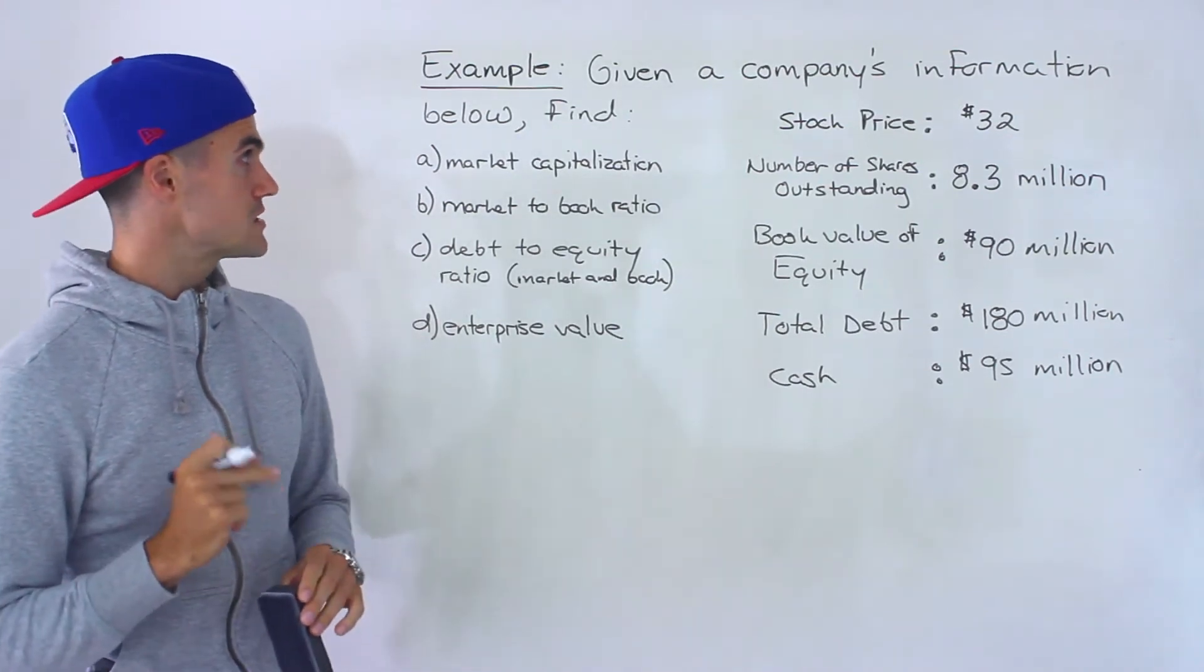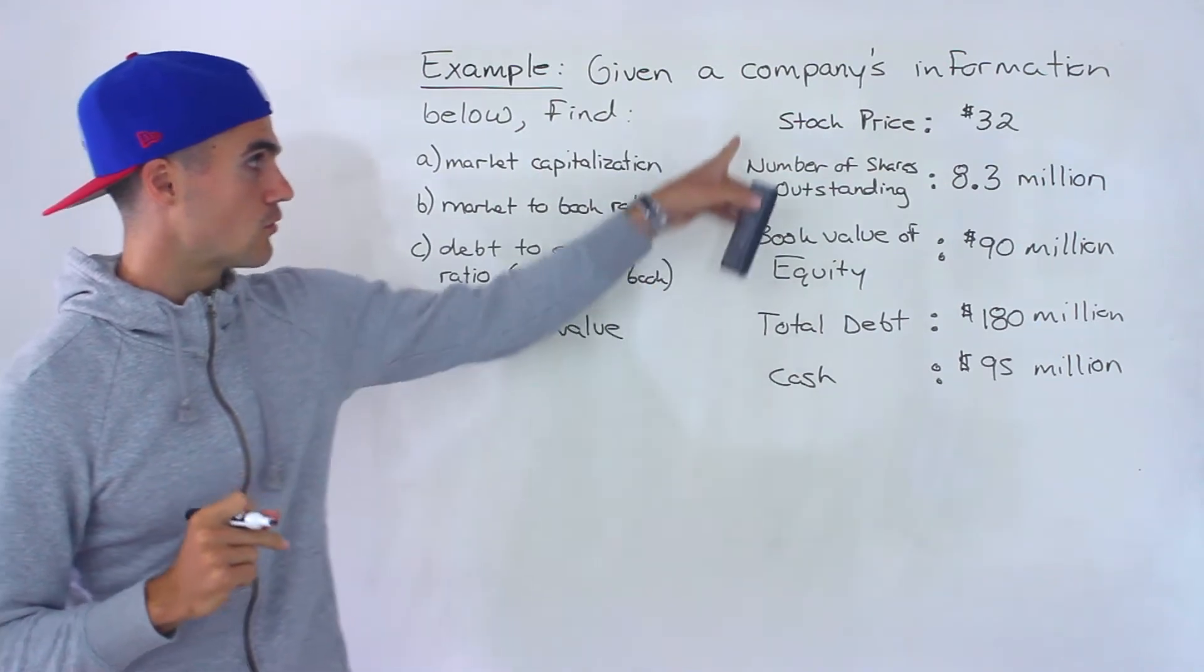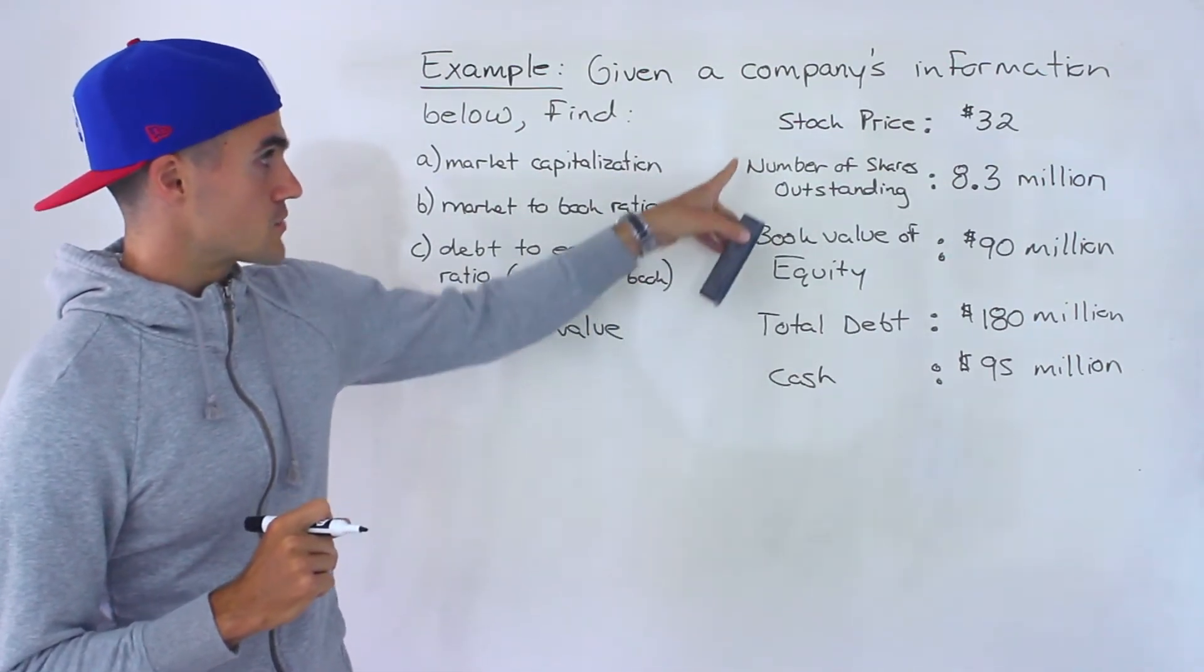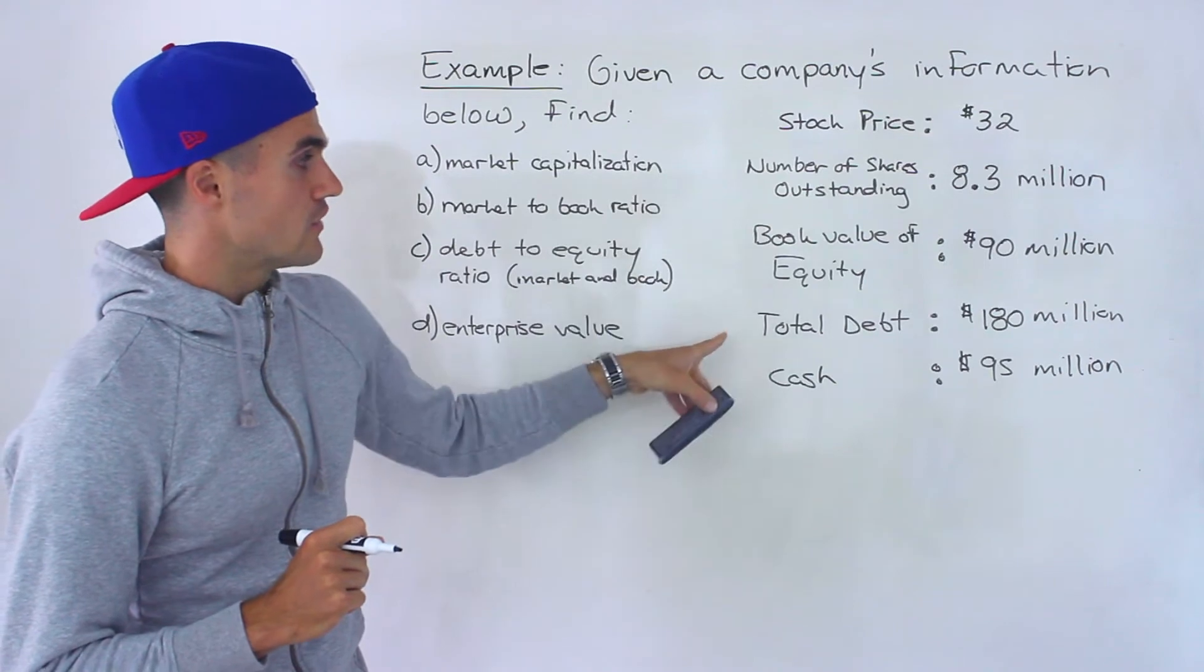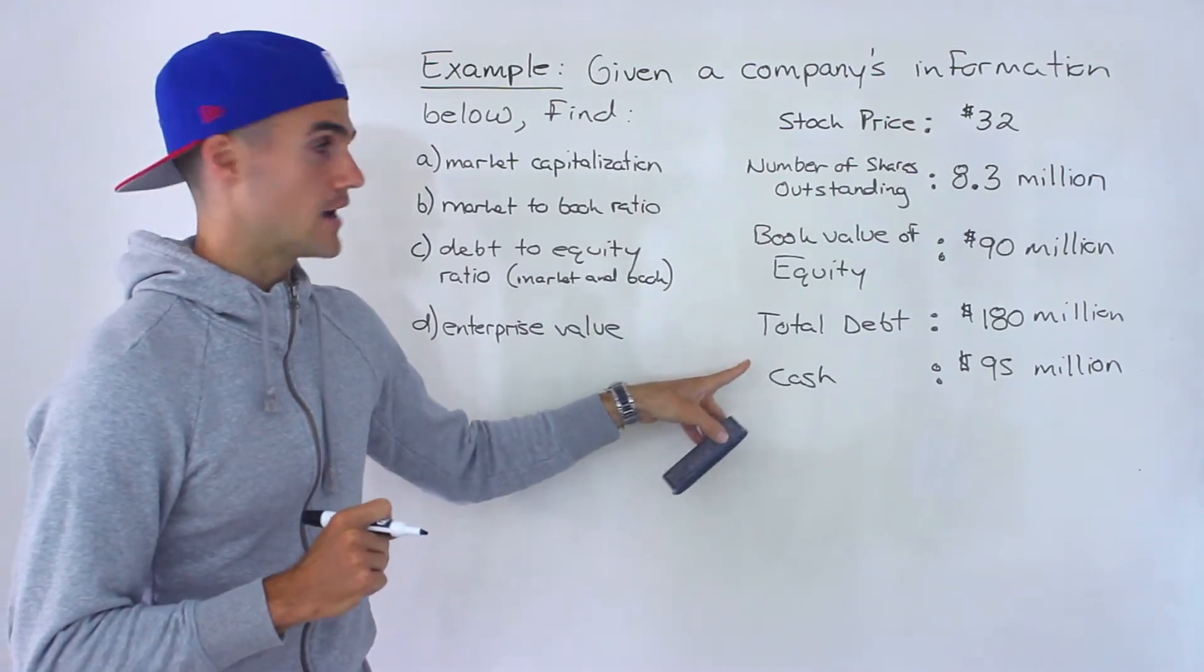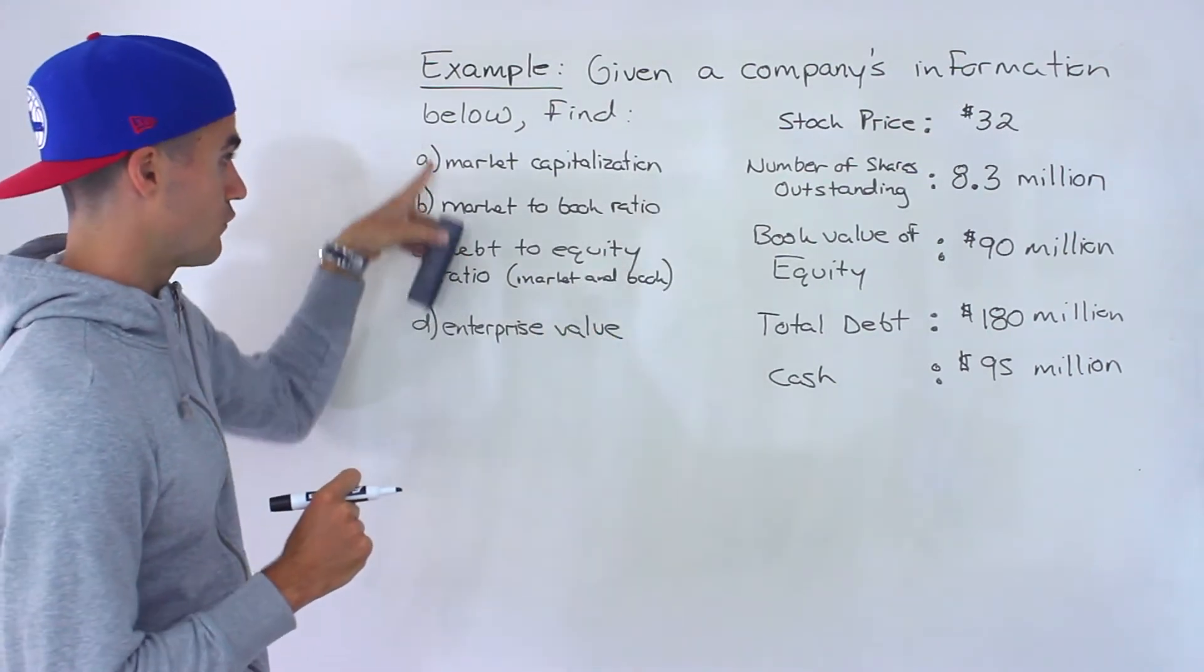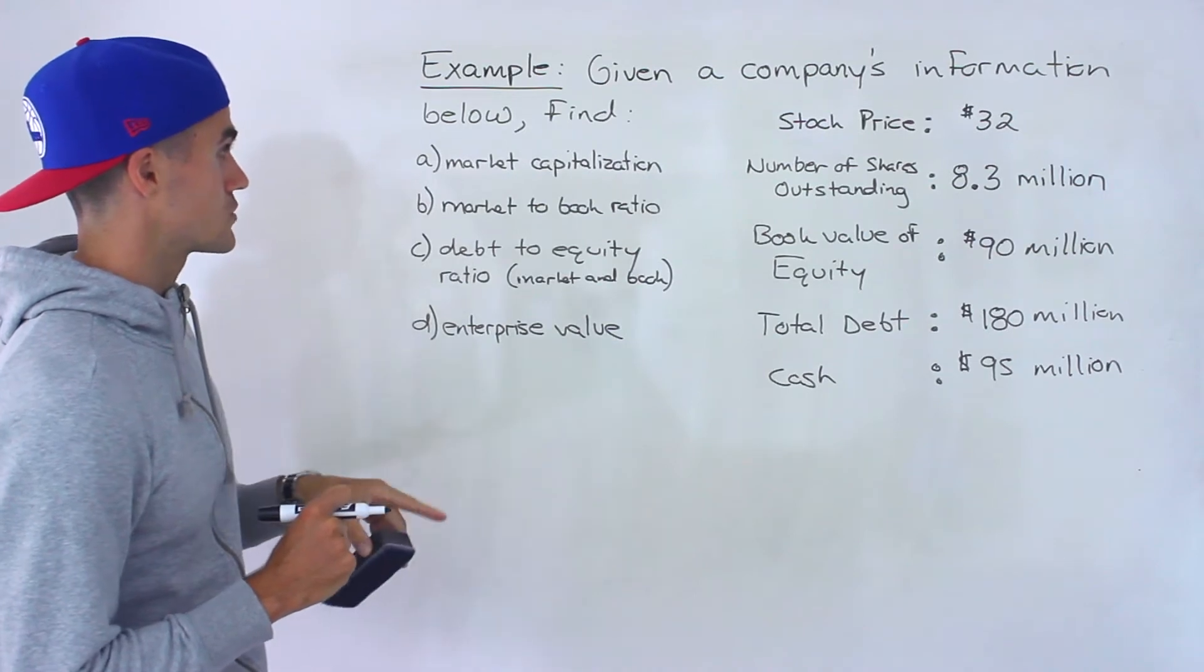So given the company's information below, notice we're given the stock price, the number of shares outstanding, the book value of equity, the total debt, and then the cash. So given all that information, we have to find these things right here.